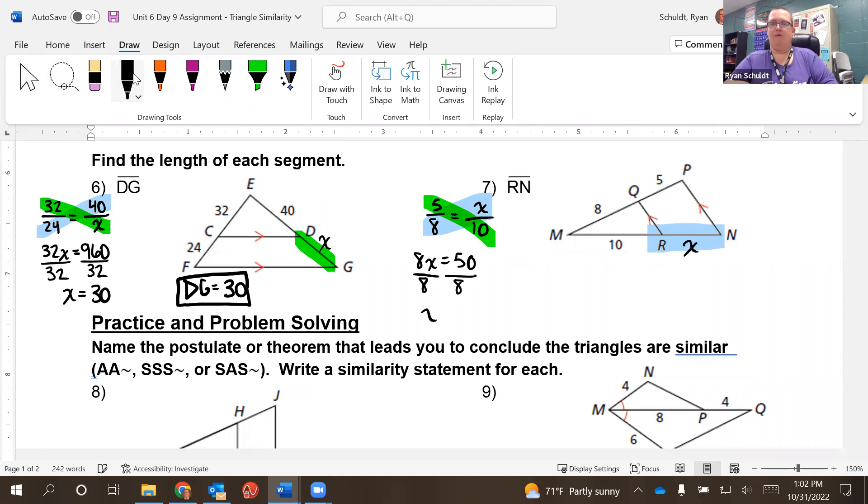And we get X equals, it will be a decimal, 6.25. So that means our RN is equal to 6.25. Okay. There's our guided practice.